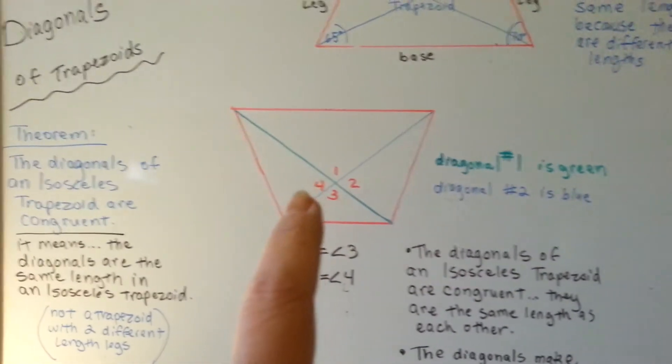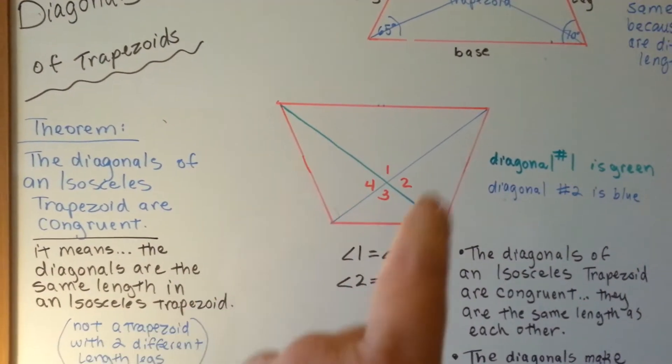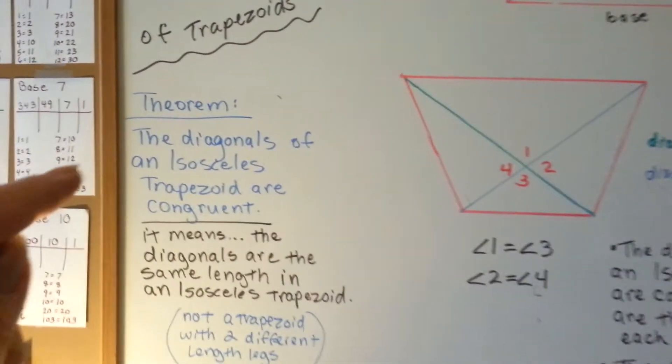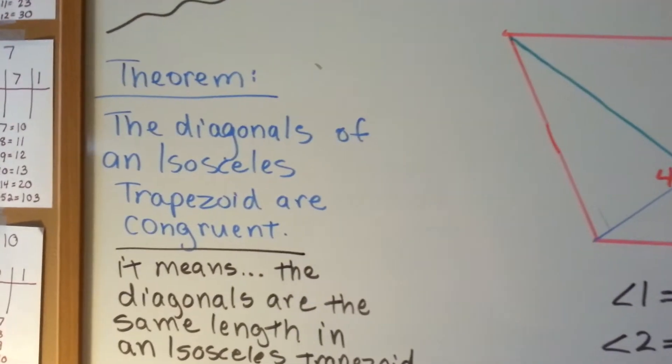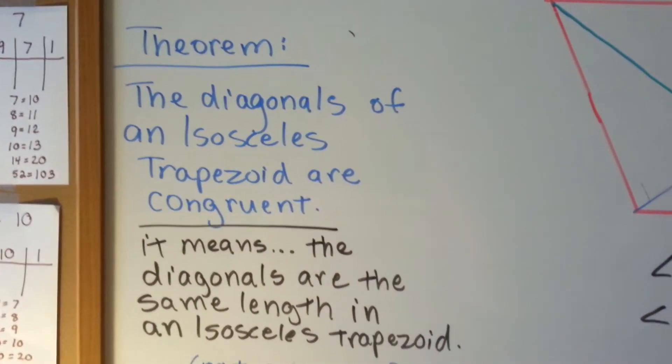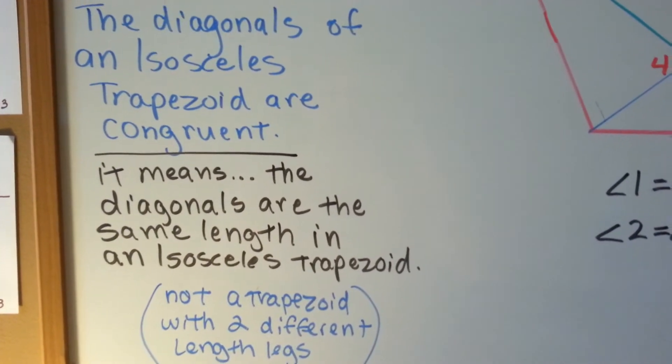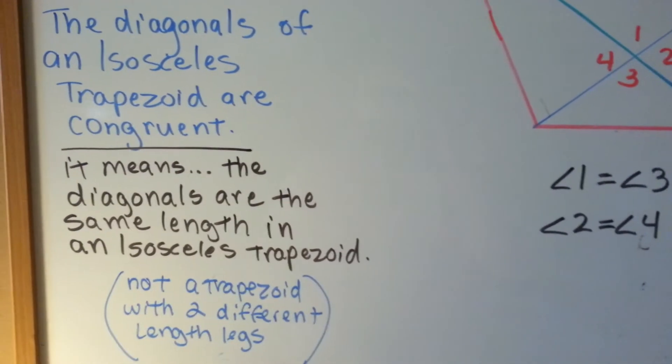On an isosceles trapezoid, the diagonals are congruent. That's our theorem. The diagonals of an isosceles trapezoid are congruent. It means they're the same length in an isosceles trapezoid,